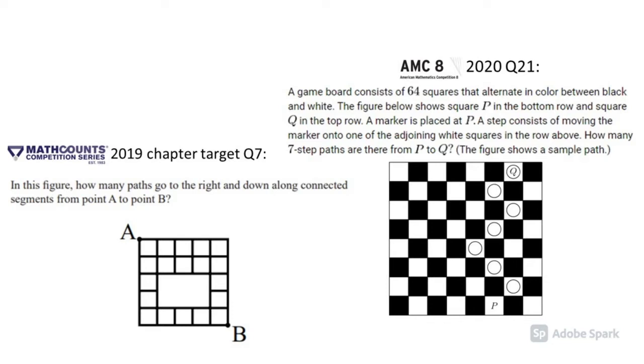The two questions look very similar. Indeed, they do require similar strategies — that is, one needs to know how to count the number of pathways.